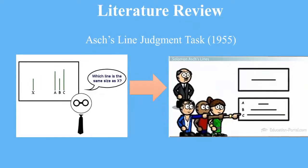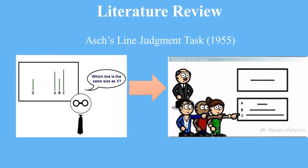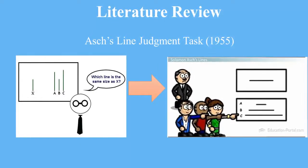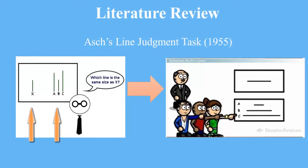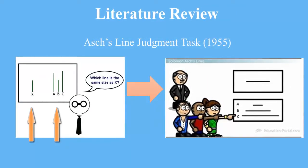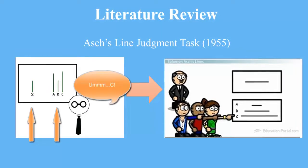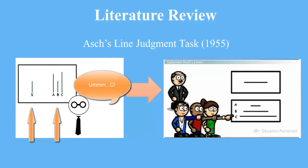In his line judgment task, Solomon Asch demonstrated that the normative desire to be accepted propels social influence. Asch prompted participants to select lines matching in length and then share answers with one another. Although only one set of lines blatantly matched, participants were willing to change their answers in order to fit into the group and avoid ridicule.